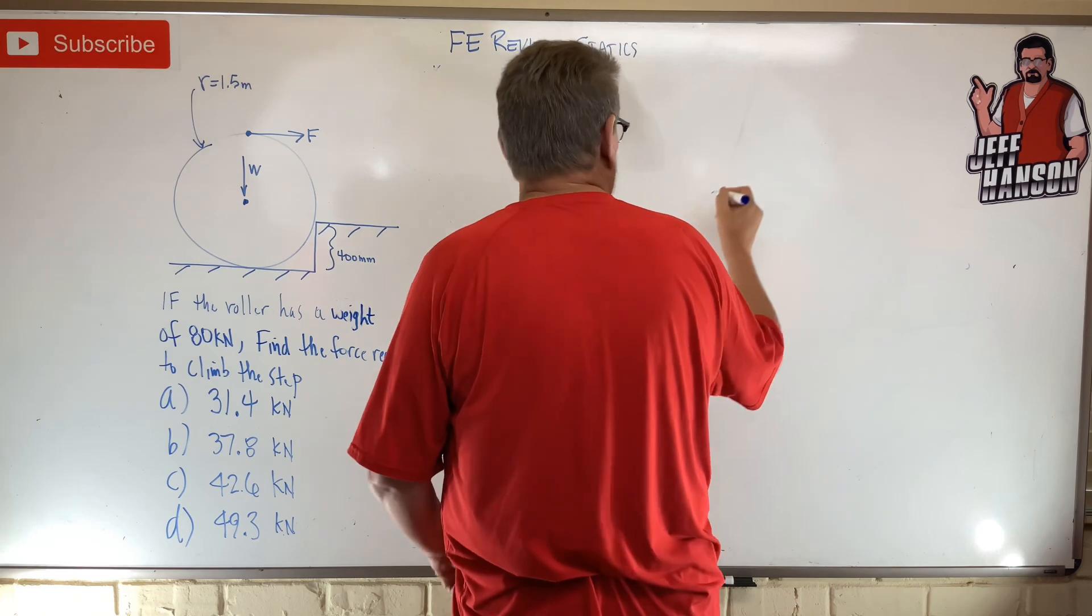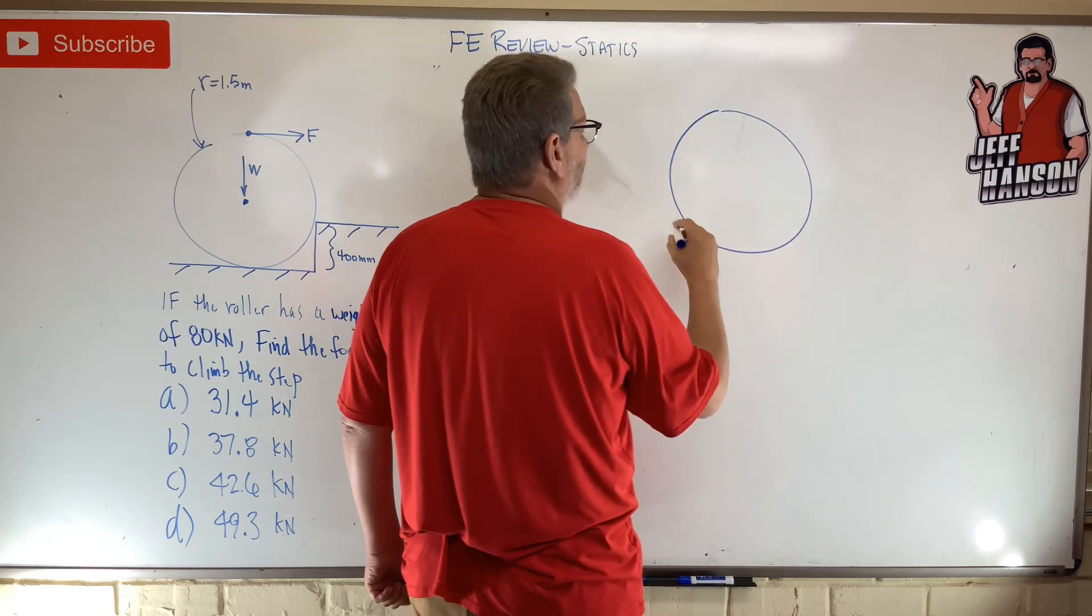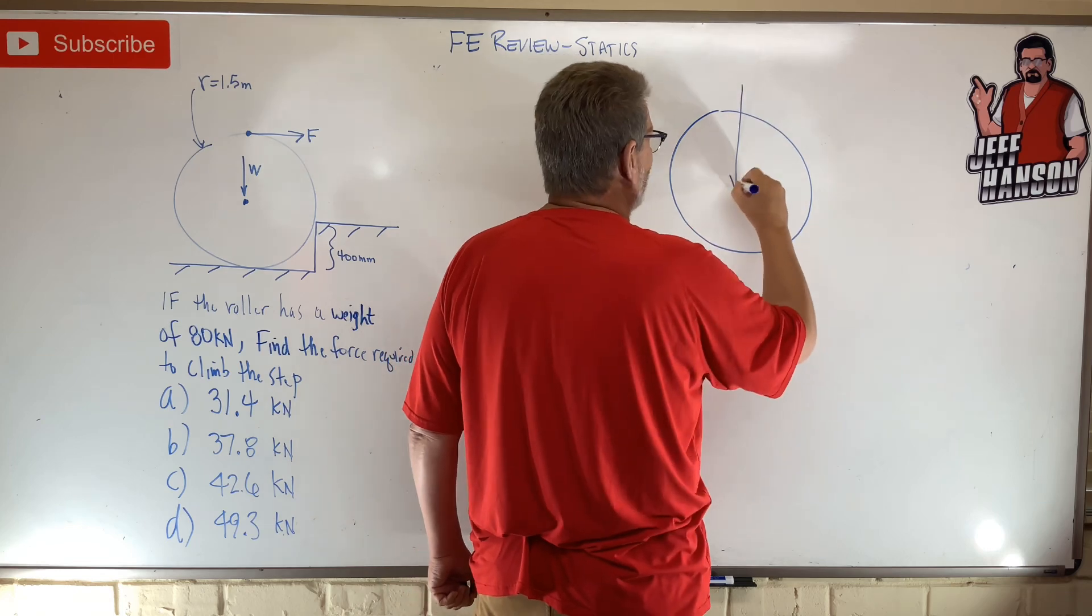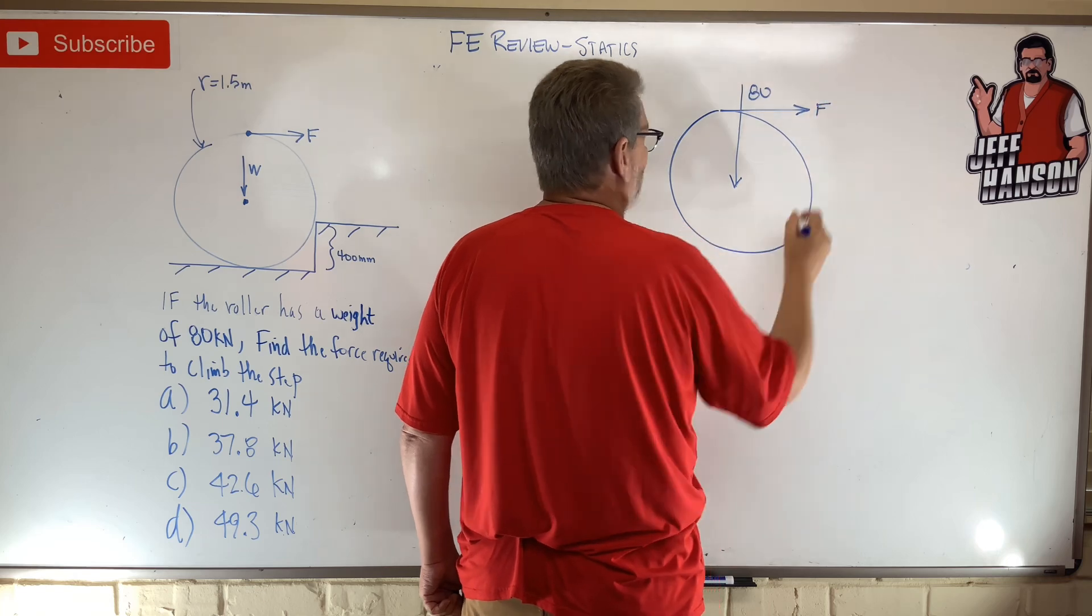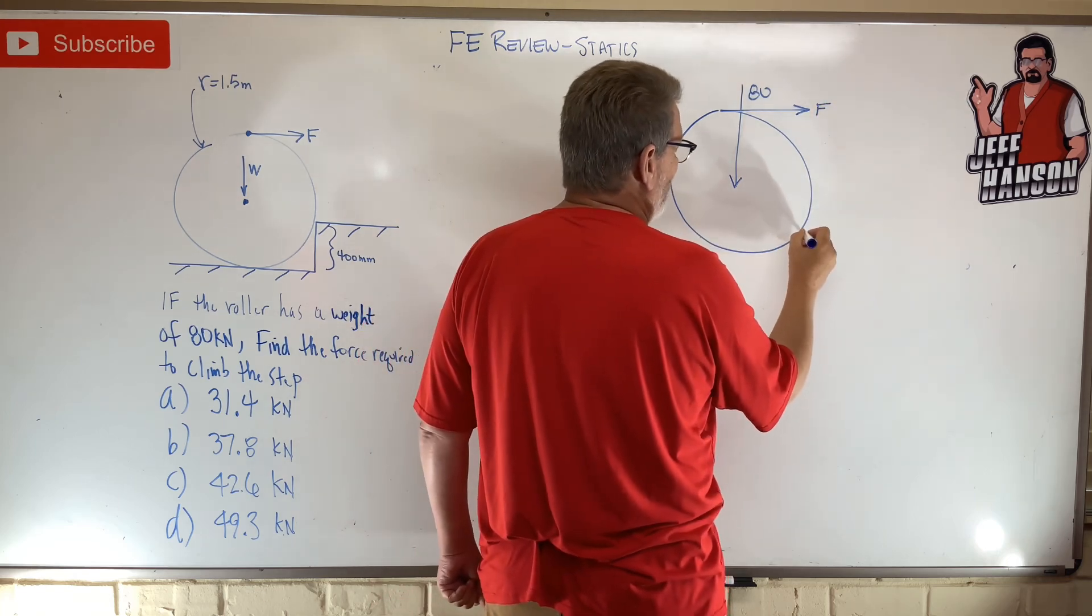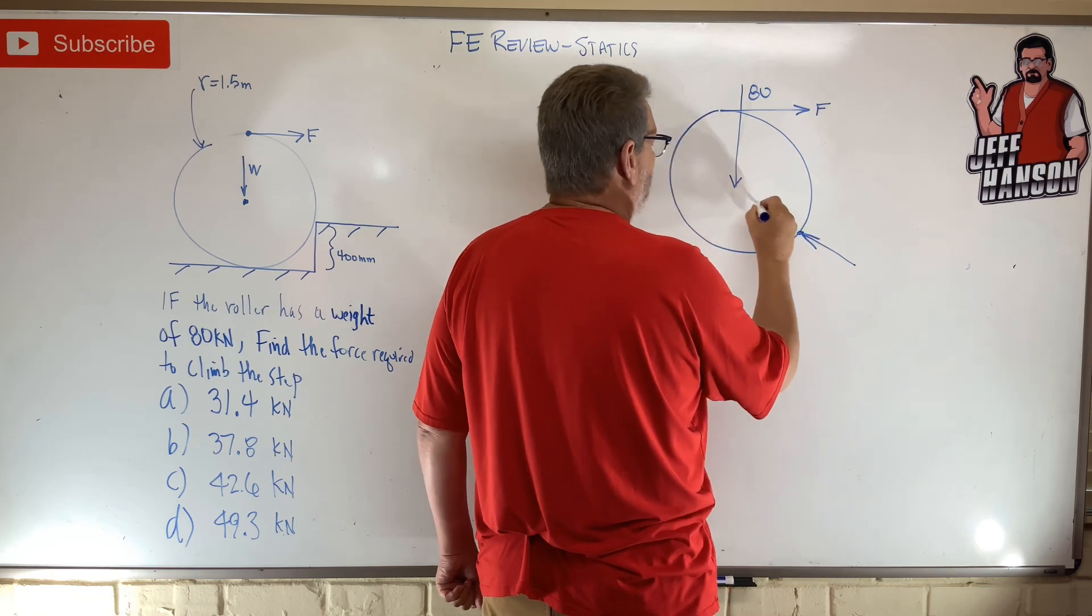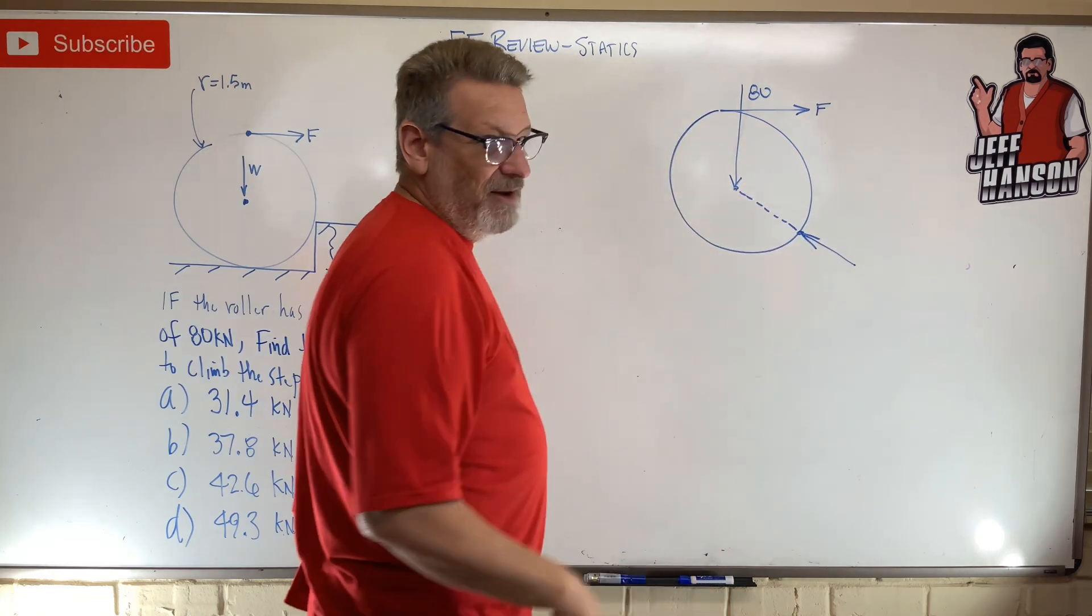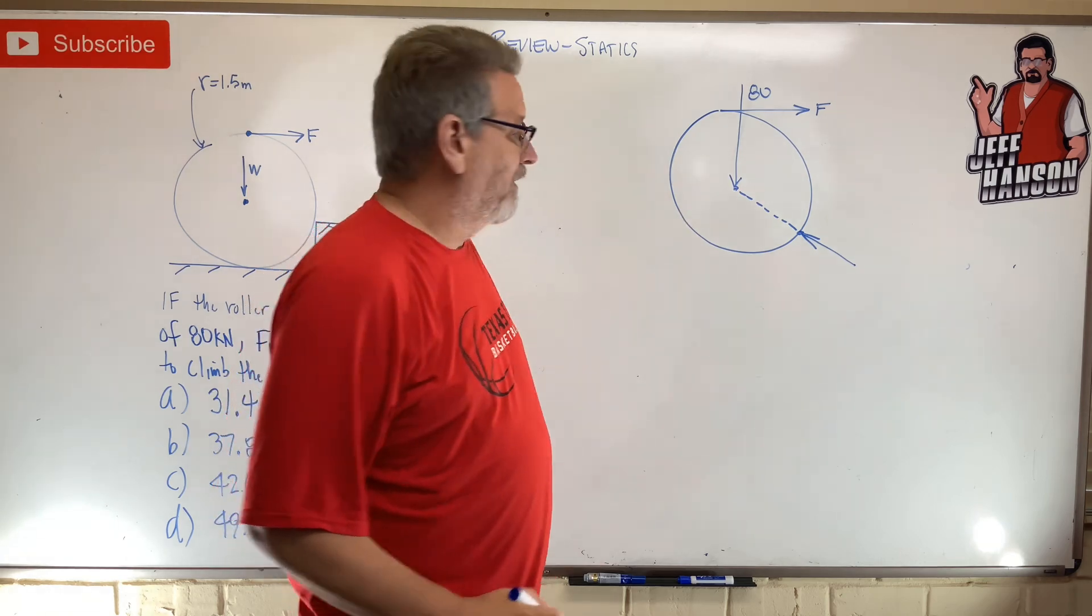Start step one, my favorite: free body diagram. Okay, I've got the weight in the middle, 80. I've got this guy at the top, F. And then I have this step over where it contacts. I'm gonna have a normal force. Now remember, normal force on round parts always goes through the center of the part.